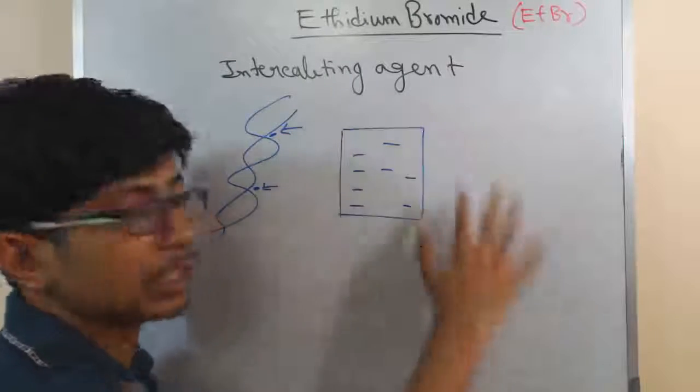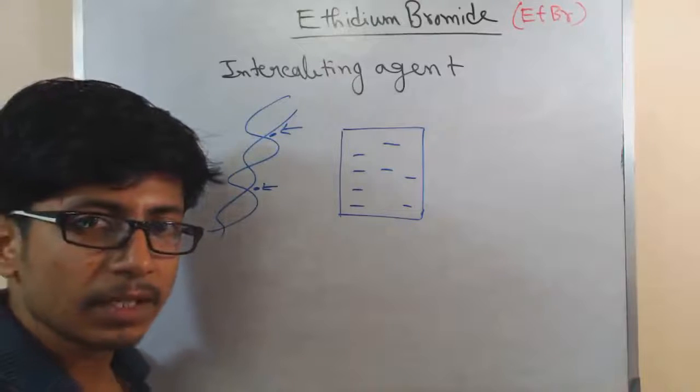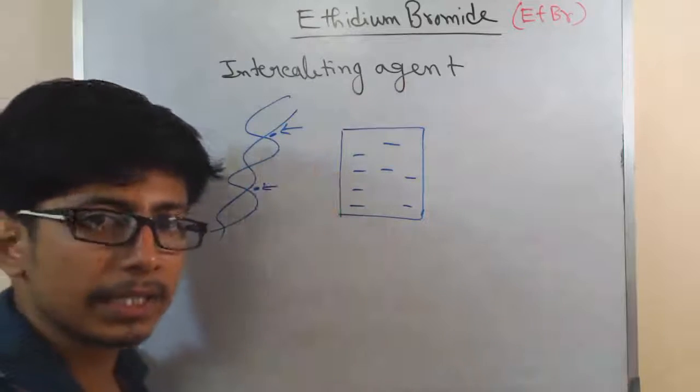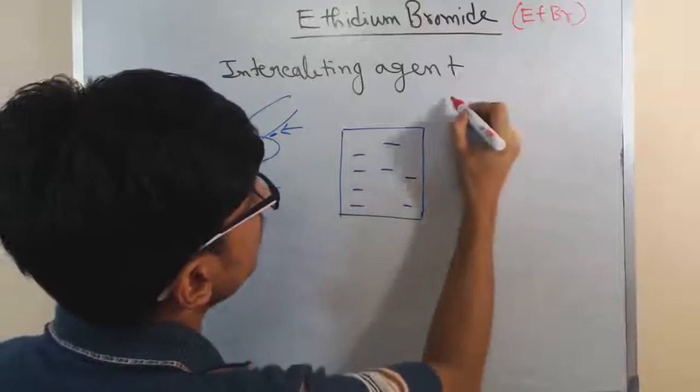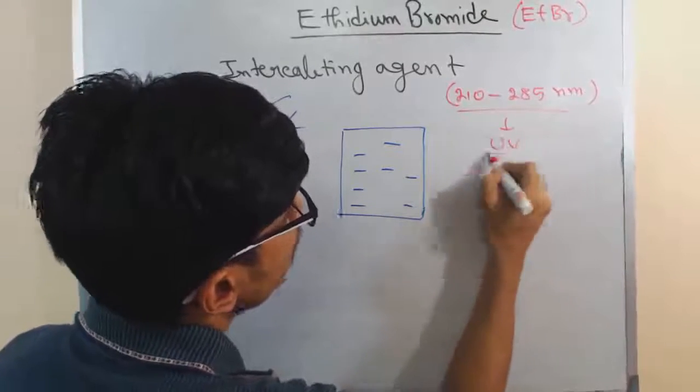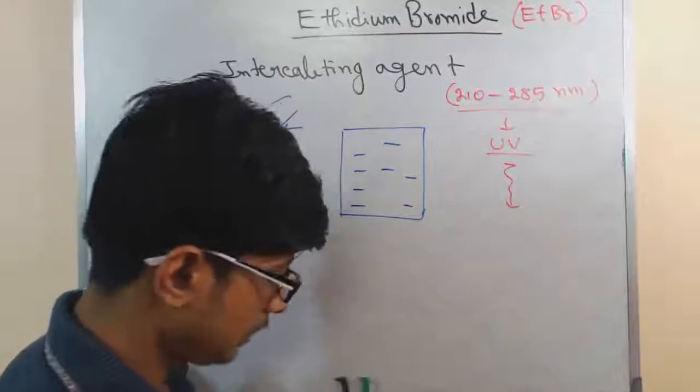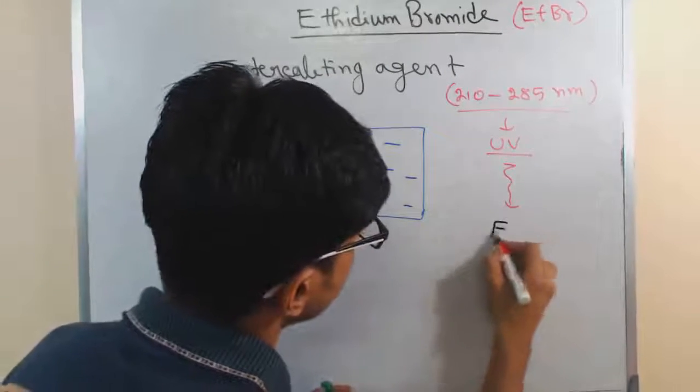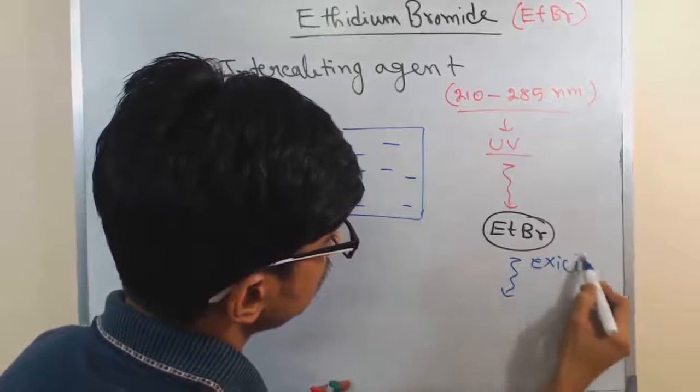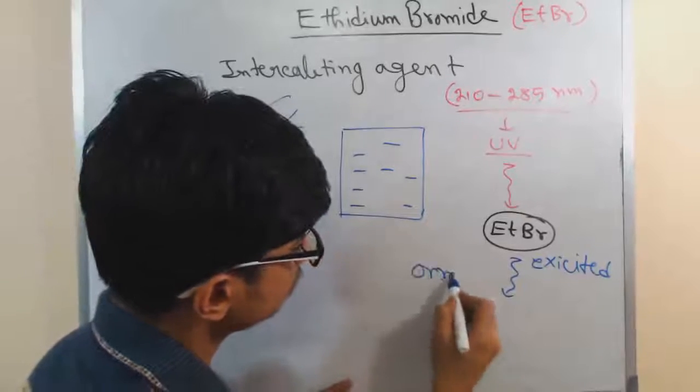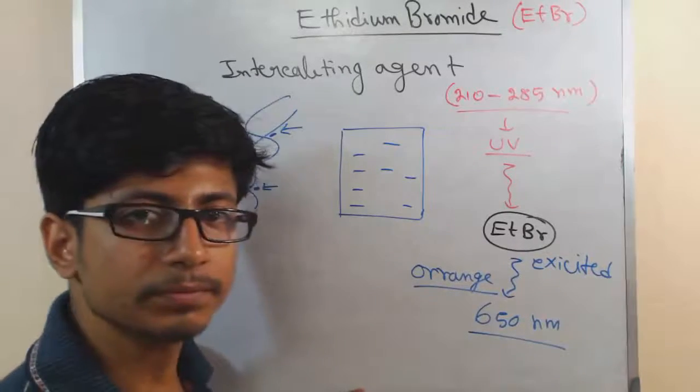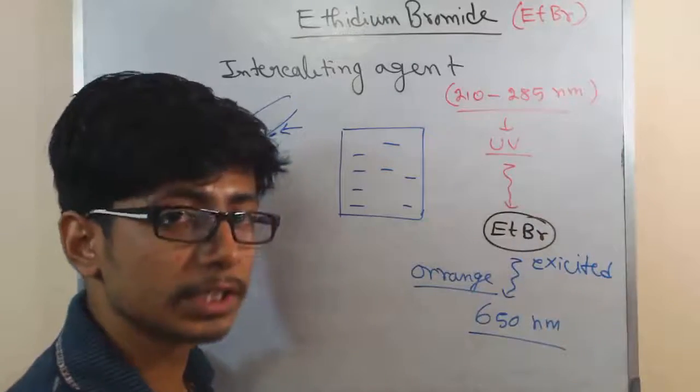After the agarose gel electrophoresis is done, we place this gel in front of UV light. Then that UV light excites all those ethidium bromide molecules that are present in the DNA. Normally the ethidium bromide gets excited from 210 to 285 nanometer of wavelength, and that is a wavelength of UV light. UV light excites ETBR, and ETBR starts to release that orange fluorescence at 650 nanometer wavelength. This is the mode of fluorescence by ETBR.